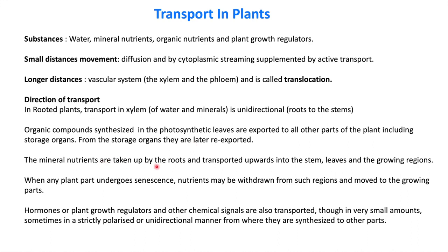Mineral nutrients are taken up by roots and transported upward into stems, leaves, and growing regions. When any part of a plant gets damaged, the plant withdraws its nutrients from that part and transports them to the growing region. Hormones and plant growth regulators are transported in small amounts and in a unidirectional way from where they are synthesized to other parts of the plant body.